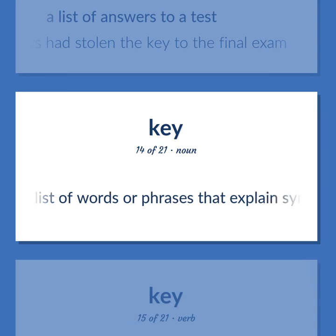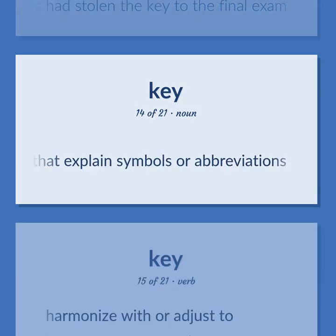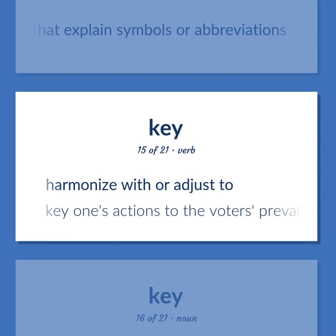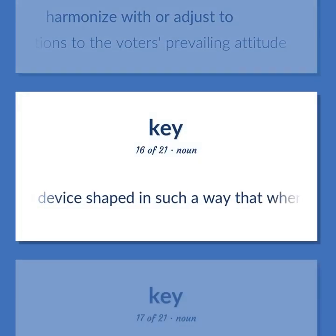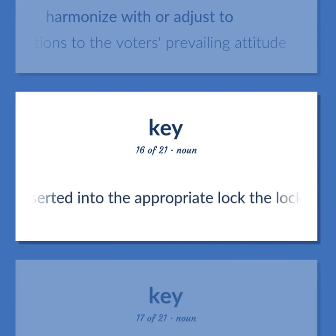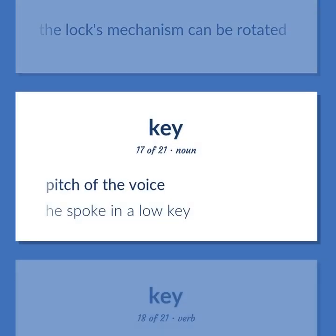A list of words or phrases that explain symbols or abbreviations. Harmonize with or adjust to. Key one's actions to the voter's prevailing attitude. Metal device shaped in such a way that when it is inserted into the appropriate lock the lock's mechanism can be rotated. Pitch of the voice. He spoke in a low key.